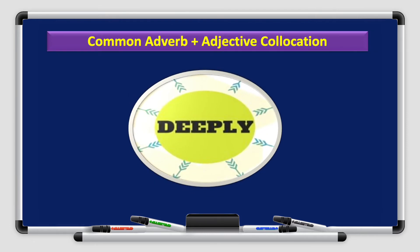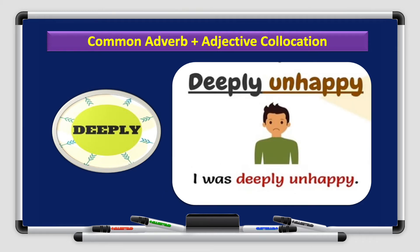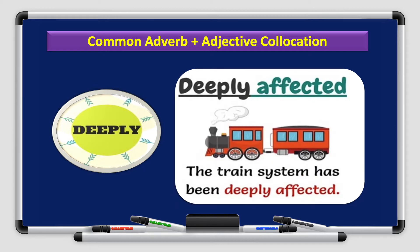Let's start with a common adverb and adjective collocation, deeply. What words usually go with deeply to form a collocation? You have deeply worried. I'm deeply worried about you. You have deeply unhappy. I was deeply unhappy. Deeply committed is another common collocation. It was a deeply committed performance. Deeply affected, the train system has been deeply affected. So these two words usually go together.